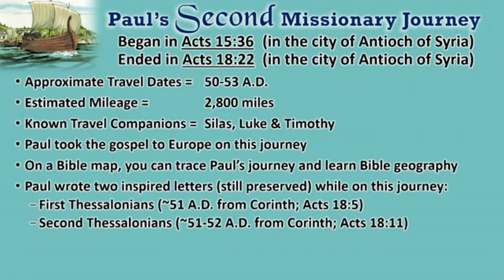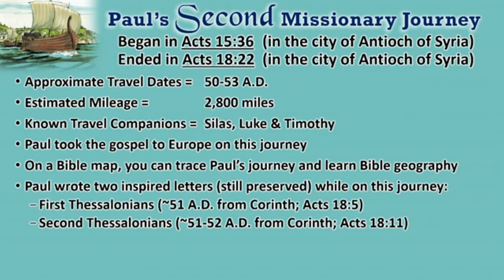The approximate dates are about 50 to 53 A.D., about 2,800 miles traveled — about twice as many miles as the first journey. His constant companions on this journey were Silas, Luke, and Timothy. This is the first time that Paul takes the gospel into Europe — not the first time it's there, but the first time Paul is able to take it into Europe. Paul's missionary journeys are a great time to learn Bible geography. It's also on this journey that Paul writes the first two New Testament books — First and Second Thessalonians — while in the city of Corinth.